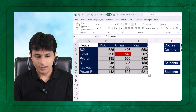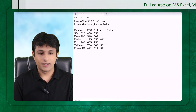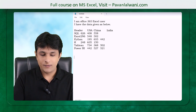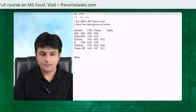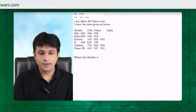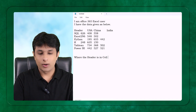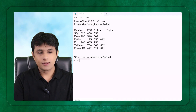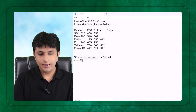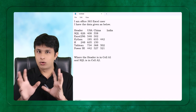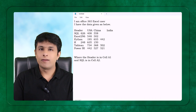I can copy the data with Ctrl+C and paste it into the Notepad. Then I need to tell ChatGPT the location of the data — for example, the header is in cell A1 and SQL is in cell A2. I've now given the location of the dataset.